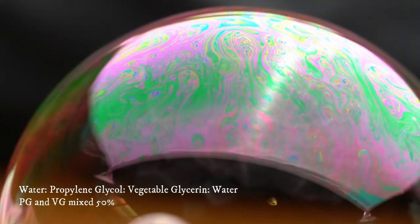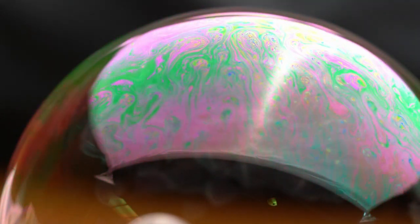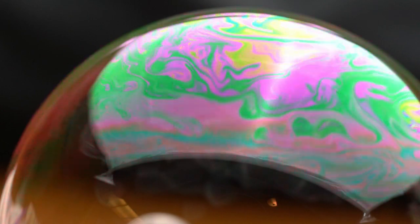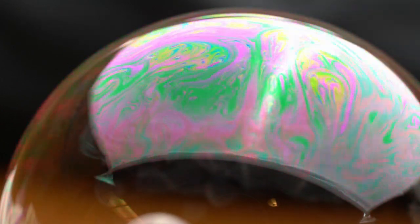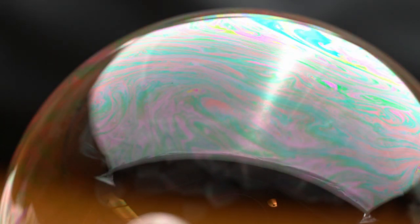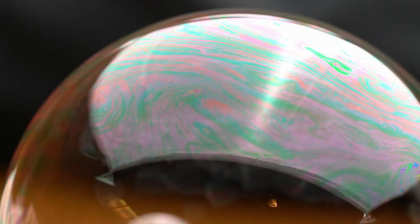Then I tried mixing equal parts of water and soap, and then half and half vegetable glycerin and propylene glycol, hoping to get some of both. So you get the dynamic display, and then it freezes out. But it takes much longer to freeze out. So this is the solution I've used going forward.